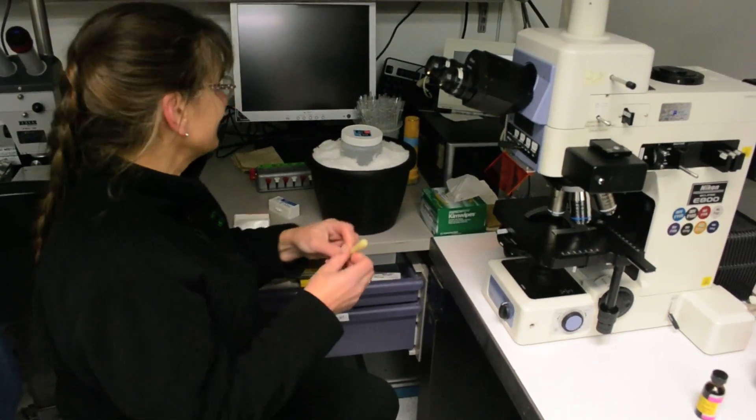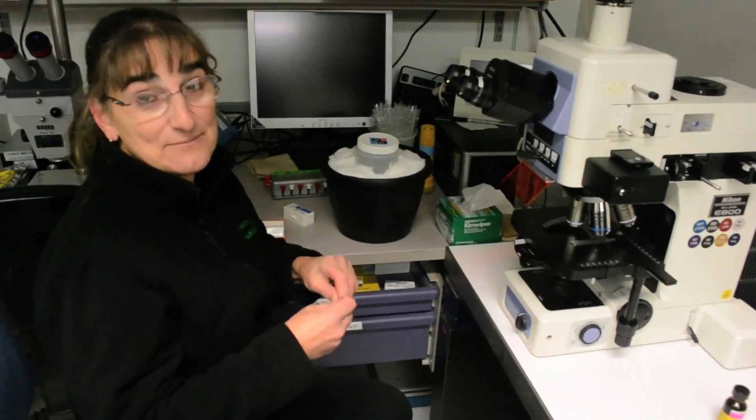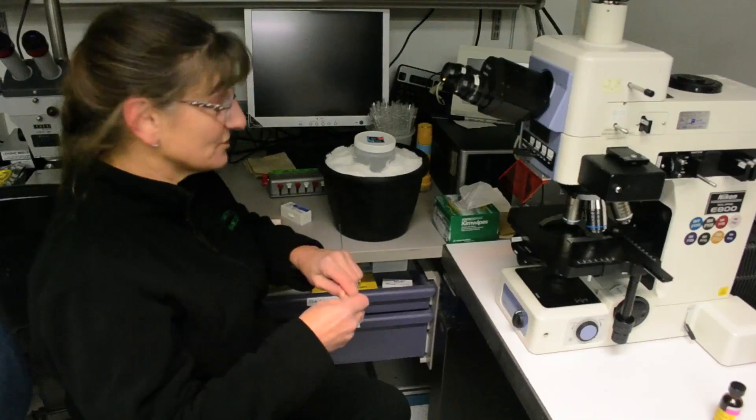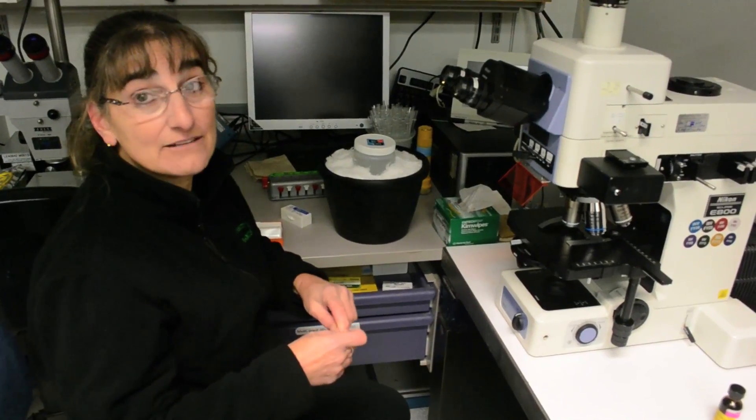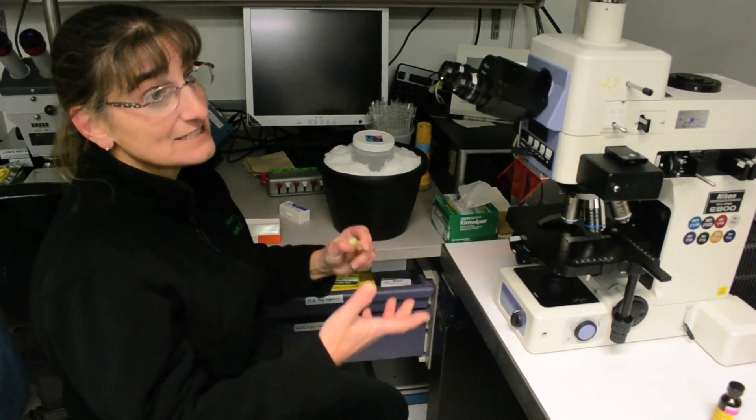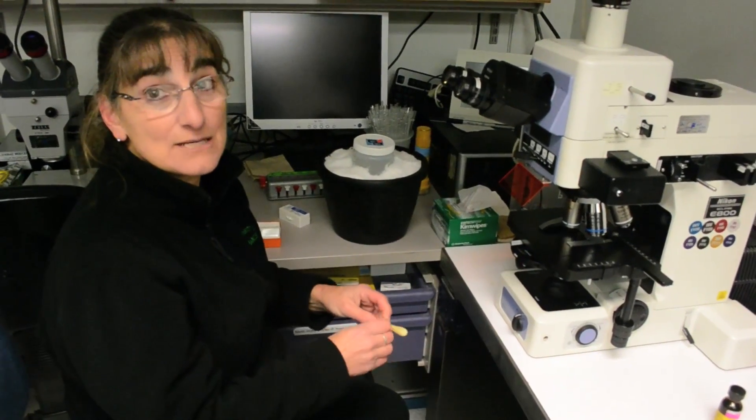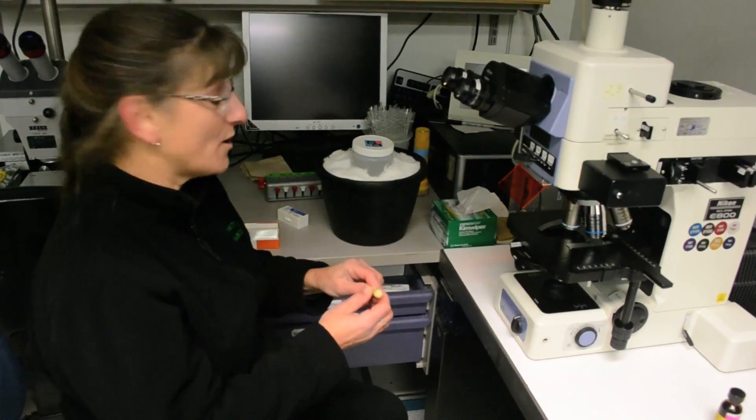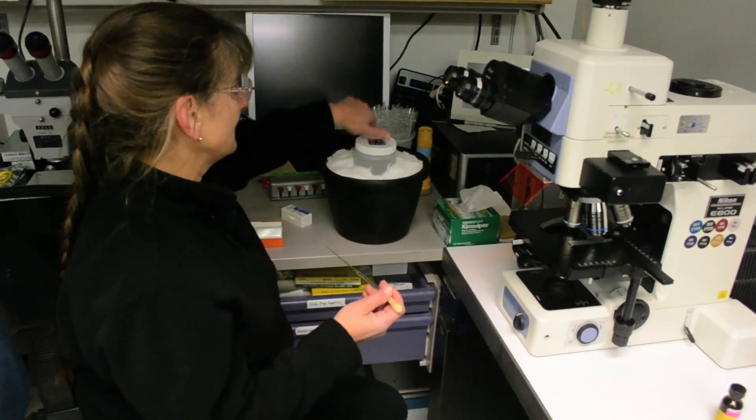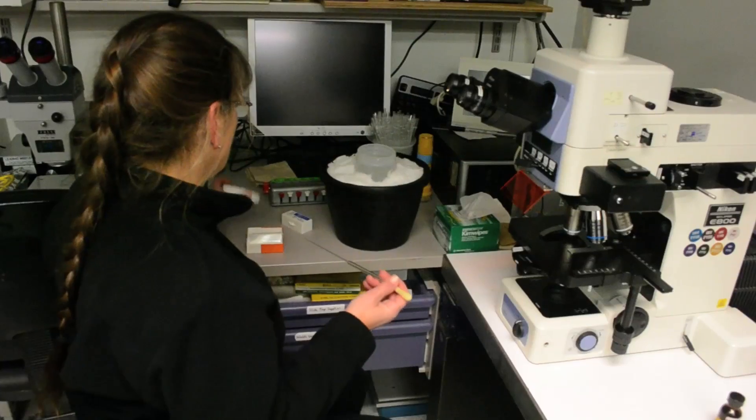Now that we've collected the net sample, what we have is a concentration of the phytoplankton that are in the water. If we had just collected the water and I put a drop on a slide, I probably wouldn't see anything because there are so few cells in the water right now. The plankton net allows us to concentrate everything that's in there.